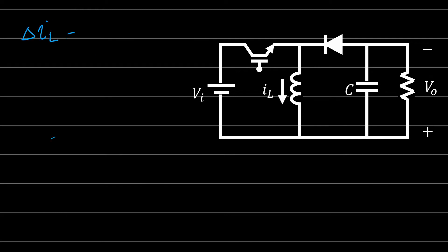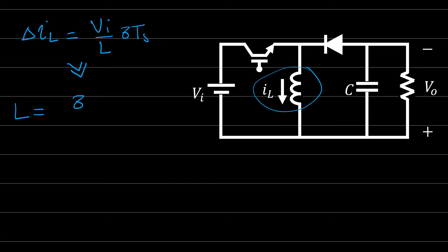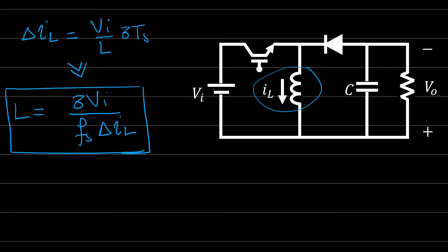From the slope analysis we can find the inductor current ripple. The inductor current ripple ΔI_L equals (V_in / L) · δ·Ts. From this equation, the inductor value is L = (δ · V_in) / (f_s · ΔI_L), where f_s is the switching frequency. This is how we design the inductor value at a specific ripple, input voltage, switching frequency, and duty cycle — all these values affect the inductor selection.